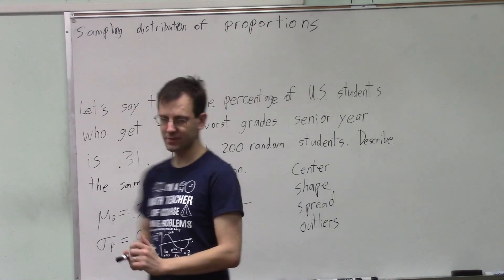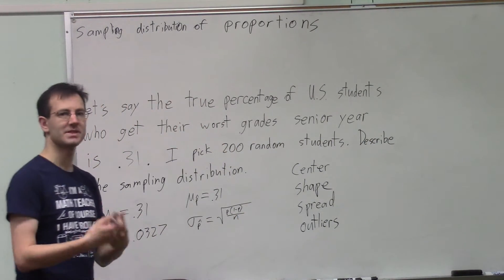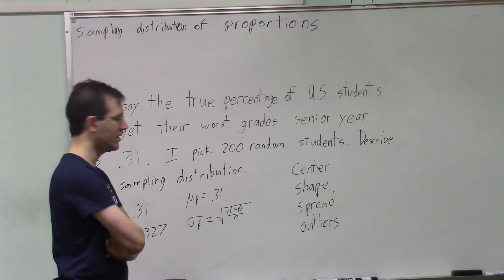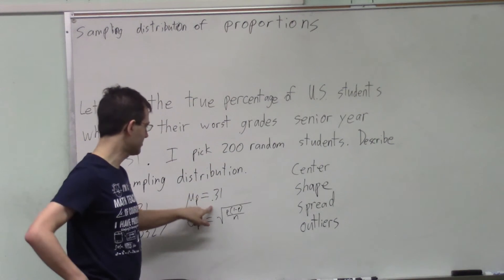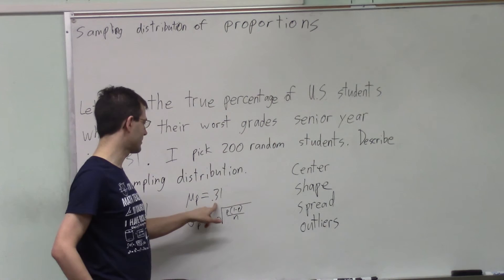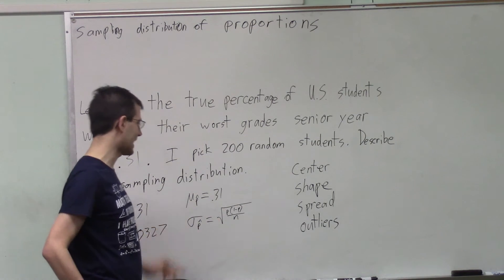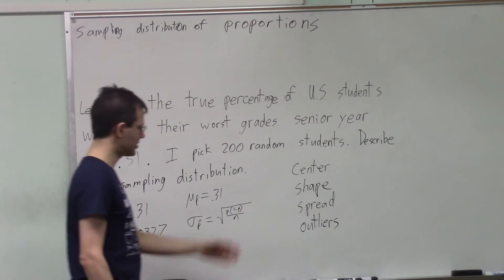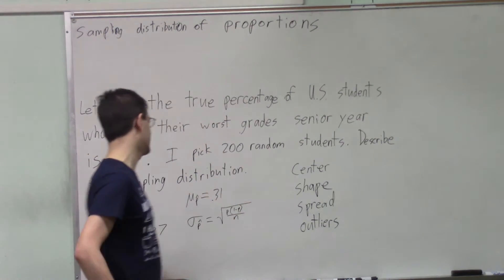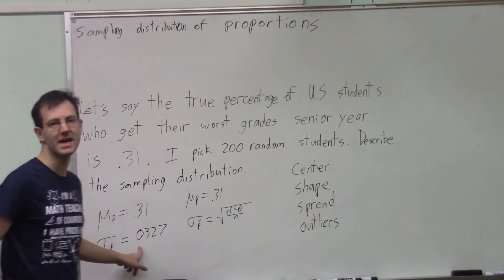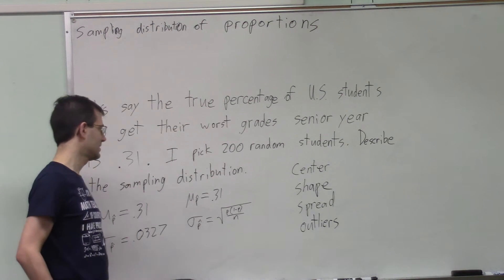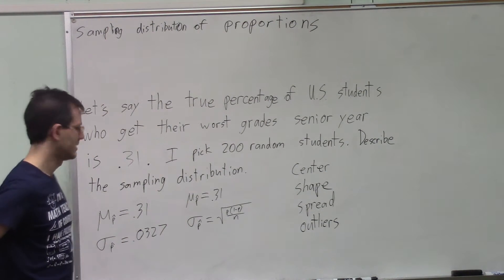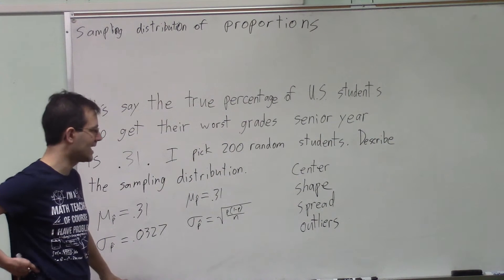Well, we know the average result will be 31%. This is the center of all possible results. On average, you will get 31% of them, just like the actual truth. The shape, well, we can do the spread. The spread, we typically miss that by about 3.3%. So now we have some idea of how much we're missing the truth by.